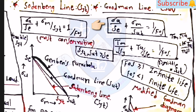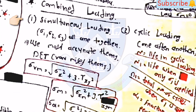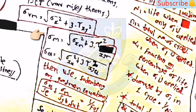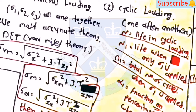For the Goodman equation: Sigma_a / S_e + Sigma_m / S_ut = 1 / FOS. For shear: T_m / S_sy + T_a / S_se = 1 / FOS. FOS greater than or equal to 1 is for infinite life; FOS less than 1 is for finite life. For combined loading: Sigma_VM = sqrt(Sigma_x² + 3·Tau_xy²). Sigma_m = sqrt(Sigma_xm² + 3·Tau_xym²) and Sigma_a = sqrt(Sigma_xa² + 3·Tau_xya²). Then apply Soderberg or Goodman equations.